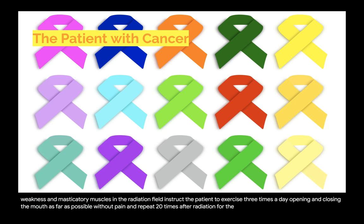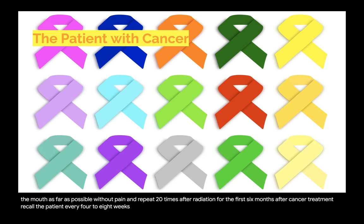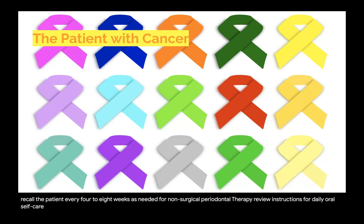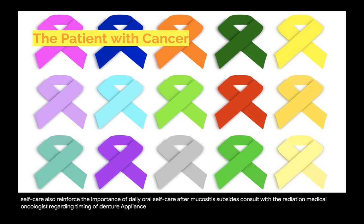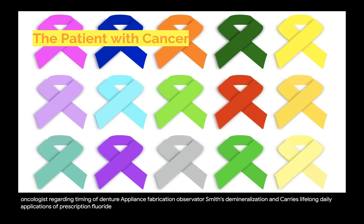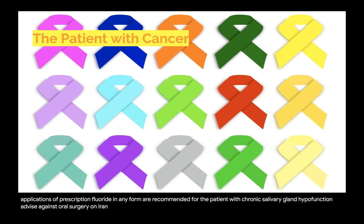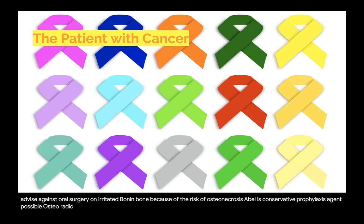After radiation: for the first six months after cancer treatment, recall the patient every four to eight weeks for non-surgical periodontal therapy. Review and reinforce instructions for daily oral self-care. After mucositis subsides, consult with the radiation or medical oncologist regarding timing of denture or appliance fabrication. Observe for trismus, demineralization, and caries. Lifelong daily applications of prescription fluoride in any form are recommended for patients with chronic salivary gland hypofunction. Advise against oral surgery on irradiated bone due to the risk of osteoradionecrosis. Tooth extraction, if unavoidable, is conservative, and prophylaxis against possible osteoradionecrosis is accomplished with pentoxifylline 400 mg pre- and post-extraction.